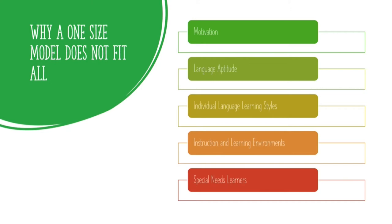Some special populations also need to be taken into consideration, which would be the special needs learners. Examples of special needs learners include deaf or hearing impaired students, gifted students, and students with learning disabilities or disorders. To be able to best suit all students, including special needs students, accommodations need to be made for the material to be accessible to them.